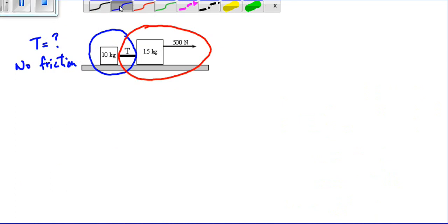Looking at our 10 kilogram object, we have our 10 kilogram object. If you look at it on its own, the force acting on it is only T. We can say, according to our equation, F net equals ma. The only force acting on it is T equals ma. Our mass is 10 and we don't have our acceleration.